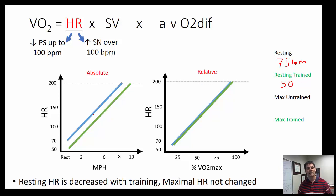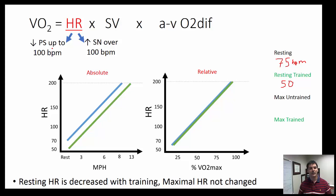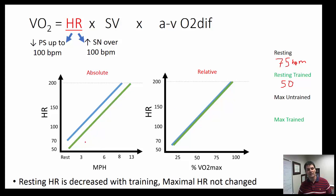This linear increase in heart rate is due to two things. We remove or reduce parasympathetic nervous stimulation of the SA node in order to get heart rate to go from resting up to 100 beats per minute. Once we get above 100, further increases in heart rate are all driven by increases in sympathetic nervous system stimulation, going from 100 to maximal heart rate. So parasympathetic withdrawal gets you from resting up to 100, and above 100, it's all sympathetic nervous system. For any given absolute exercise intensity, heart rate is lower in trained individuals than untrained, and maximal heart rate is not changed with training.